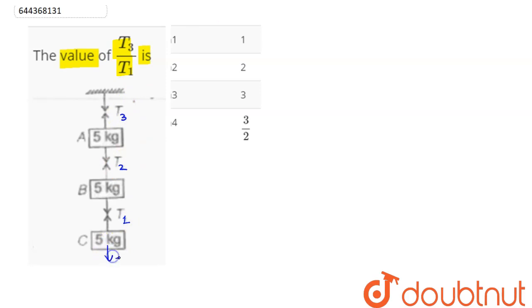Now here if we draw FBD, first of all 50 Newton. Next we have here, let's say this is 50 Newton and this here is also 50 Newton.